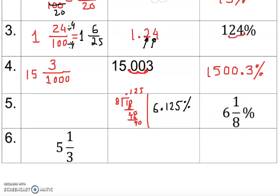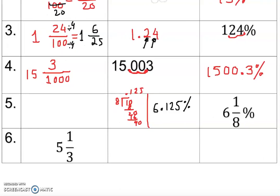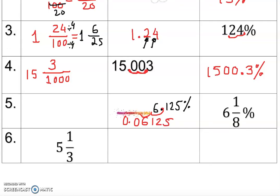I've got the decimal 6.125. The percent symbol is still there, so I need to convert to a plain decimal by moving the decimal two places to the left. Moving it twice gives us 0.06125. That is the answer.